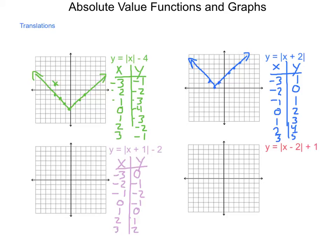Plotting these points: negative 3 comma 0, negative 2 comma negative 1, negative 1 comma negative 2, 0 comma negative 1, 1 comma 0, 2 comma 1, and 3 comma 2. We end up with that V shape again. Absolute value graphs will always have the shape of a V — from 'value.' The vertex is located at negative 1 comma negative 2. The negative 2 appears outside the absolute value, and negative 1 is what makes the inside equal 0.